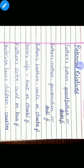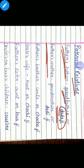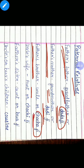Paternal family includes: paternal grandfather, paternal grandmother, father's brother which is chacha or uncle, and the uncle's wife which is chacha's aunt.